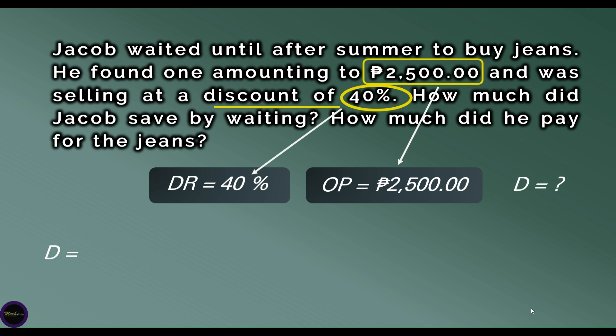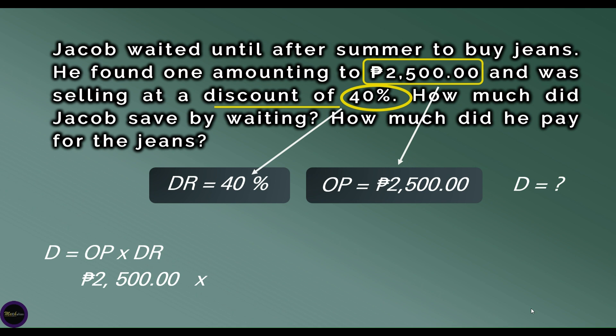To solve the problem, we apply the formula. In the discount formula, discount (D) equals the original price times the discount rate. Now we substitute each value: P2,500 for the original price times 40% for the discount rate.